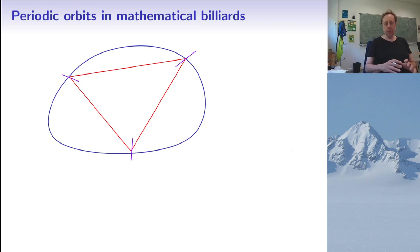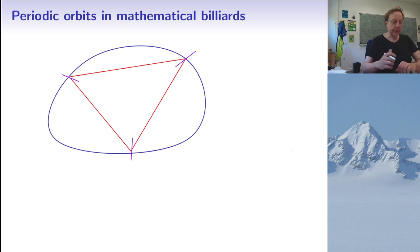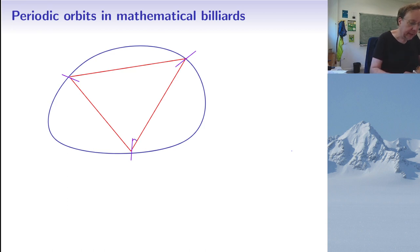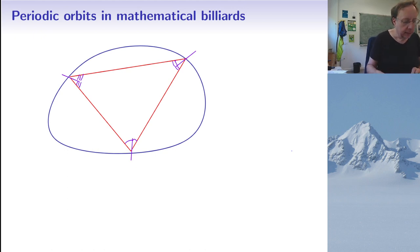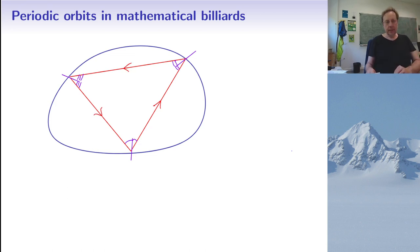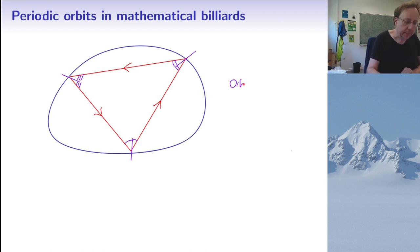Let us assume that we have a smooth convex curve in the plane and we look at the dynamics of a particle or ray of light in this domain with elastic reflections, which means that the angle of incidence equals the angle of reflection at each bounce. So let's say we move in a certain direction like this.